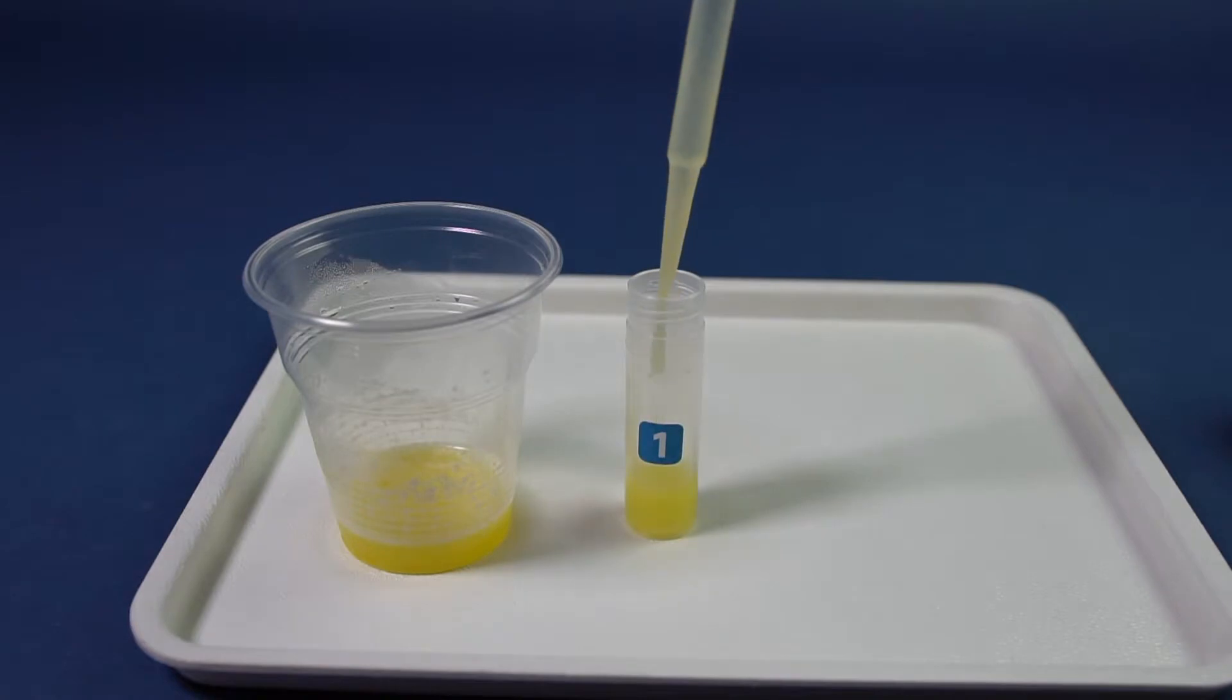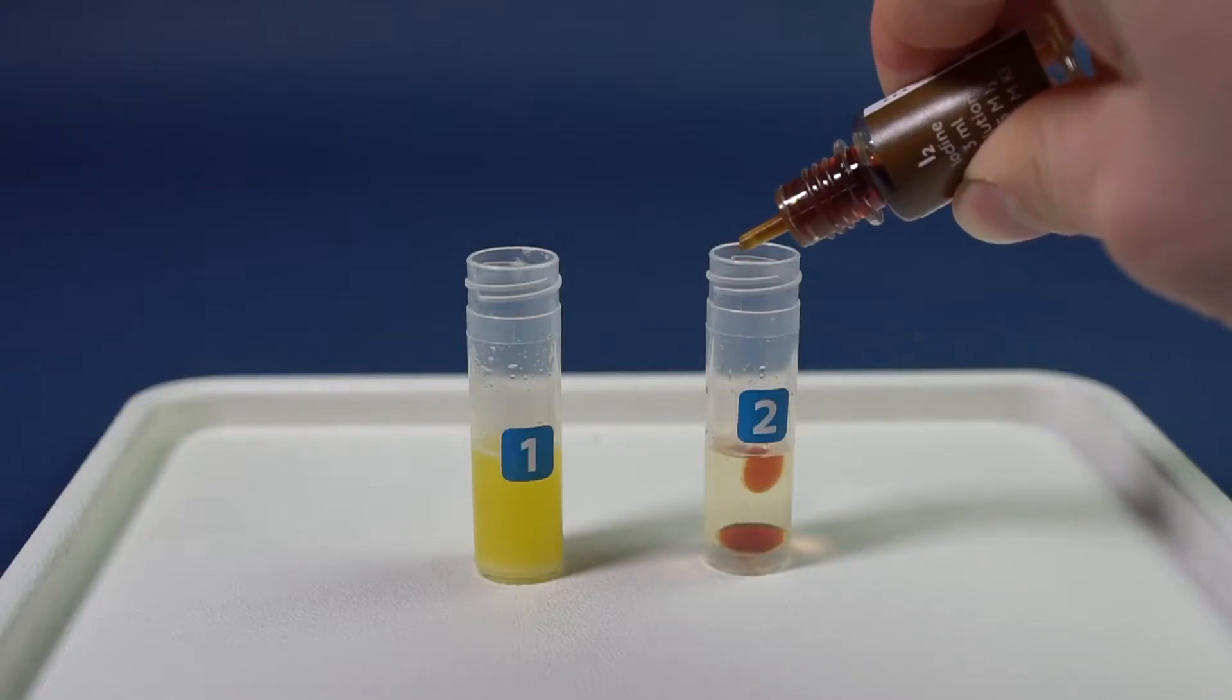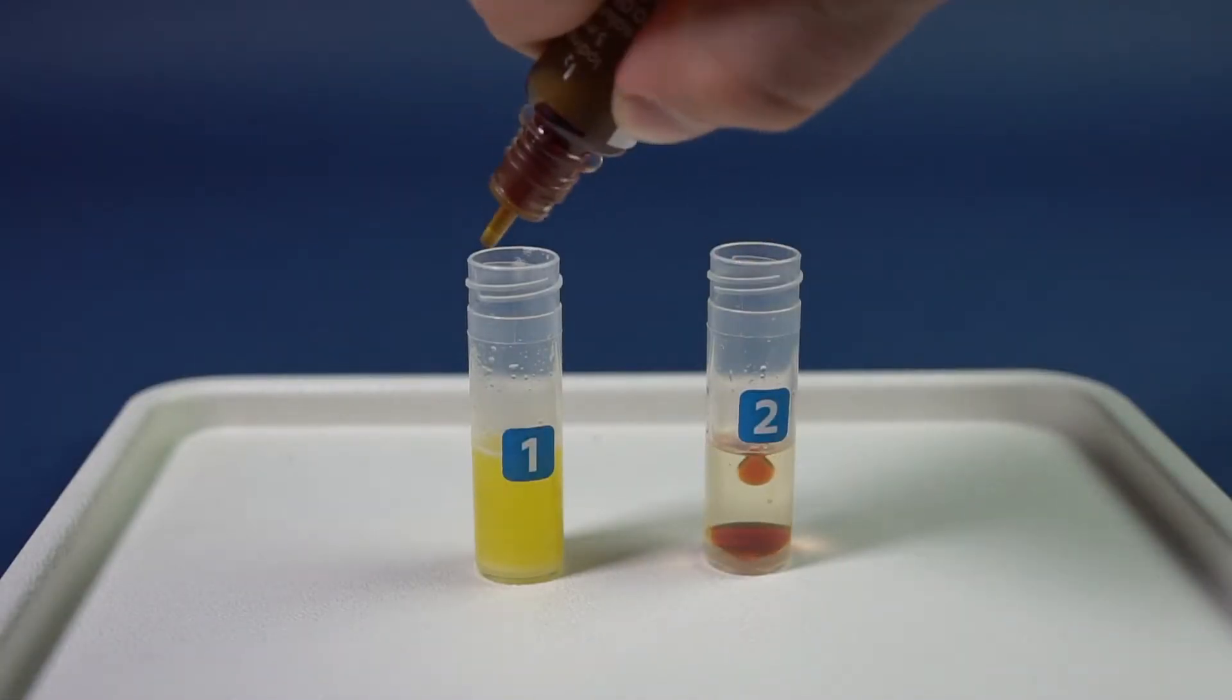Then take two vials and fill them with the fats to the half. Add one drop of iodine into each vial and heat the vials in the water bath.